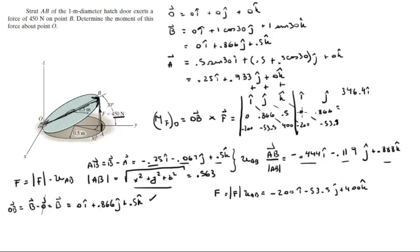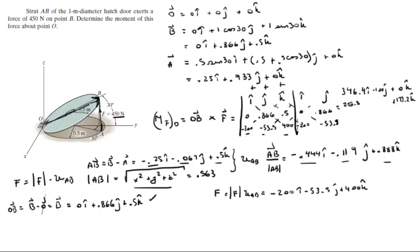Continuing with the negative diagonals: minus (−200 × 0.866) in K gives +173.2k. Minus (−53.5 × 0.5) in I gives +26.8i. And −400 × 0 in J gives 0j.